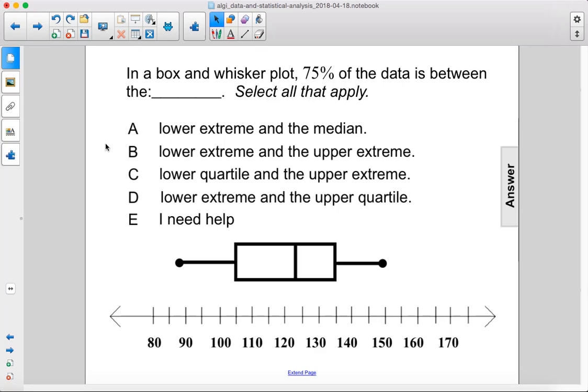In a box and whisker plot, 75% of the data is between the lower extreme and the median.